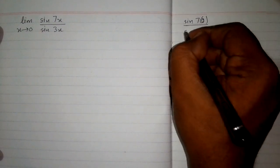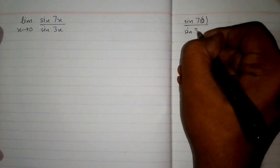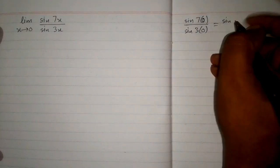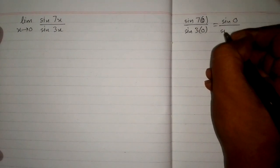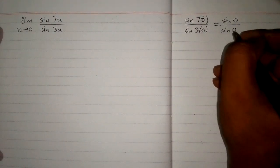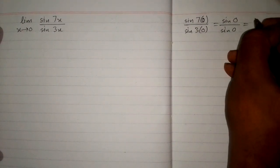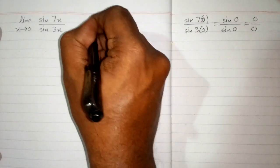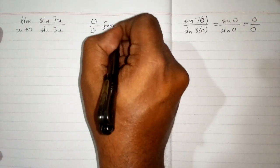So first of all we will apply the limit directly. So we will put 0 in place of x. Now 7 times 0 is 0 and 3 times 0 is 0, and sine 0 is 0. So we have 0 upon 0 form which is an indeterminate form.